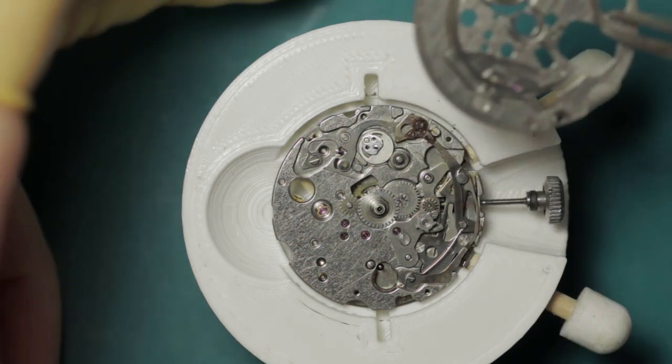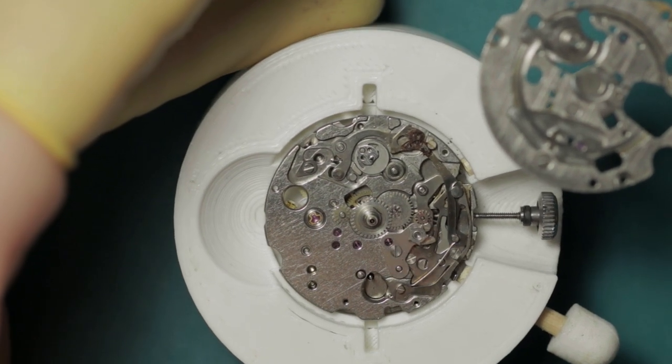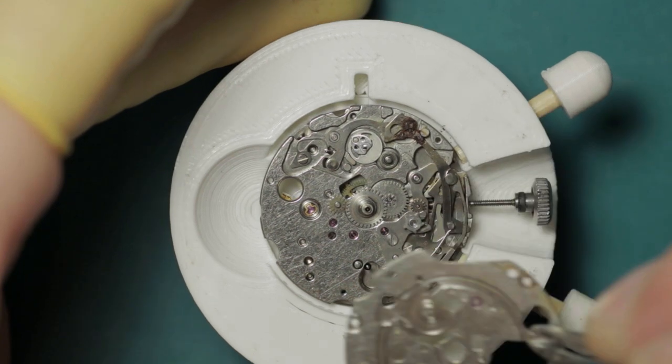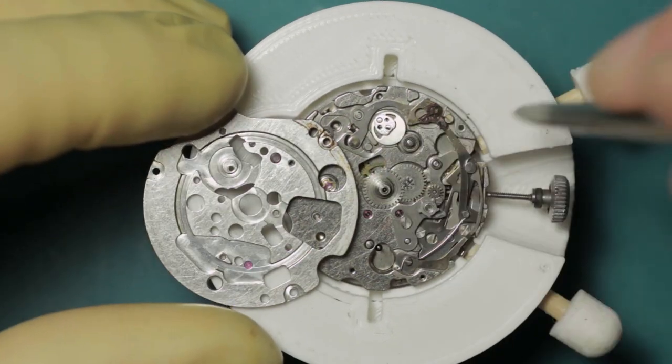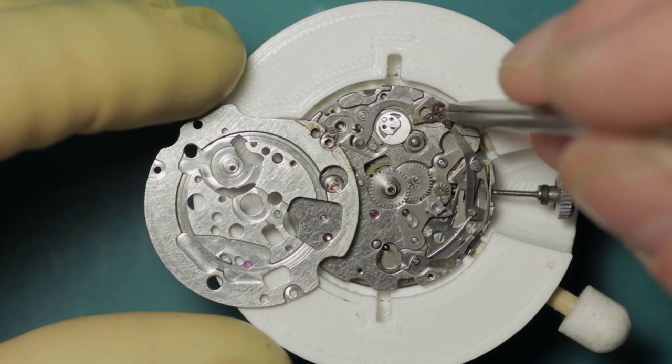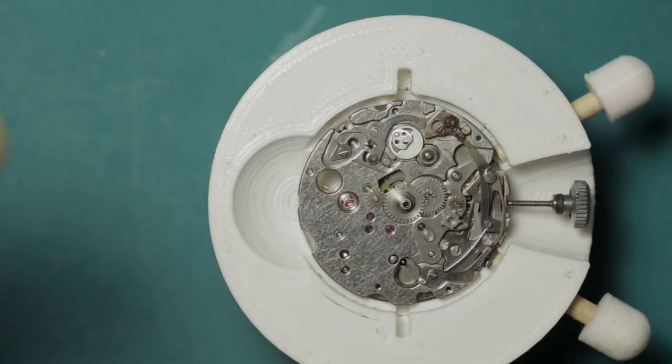So with that done, I'm now going to continue the strip down of this particular watch, and I'll be checking for any other areas requiring attention. Thankfully, it looks like it's isolated to just this little area here. Hopefully the corrosion won't be so bad that this is unusable, but we shall see when I clean that up a little.